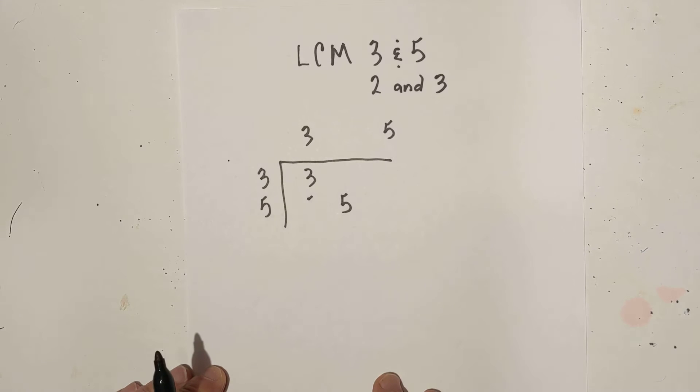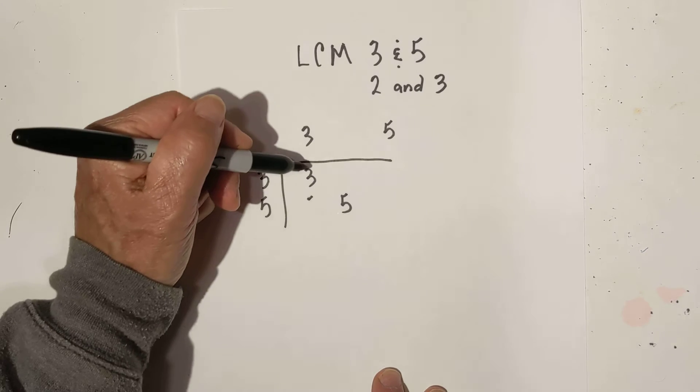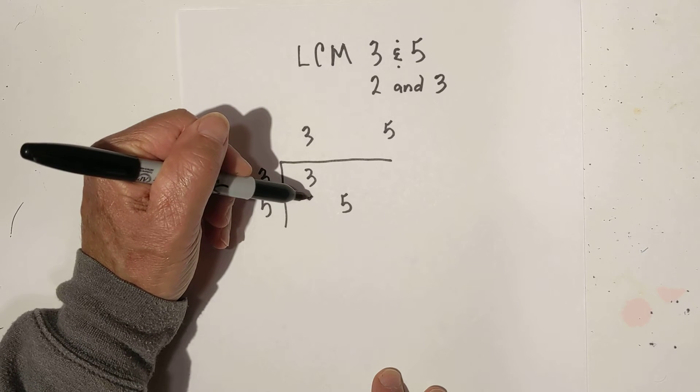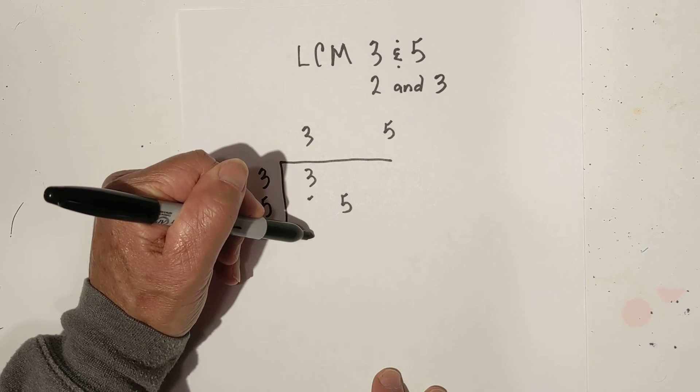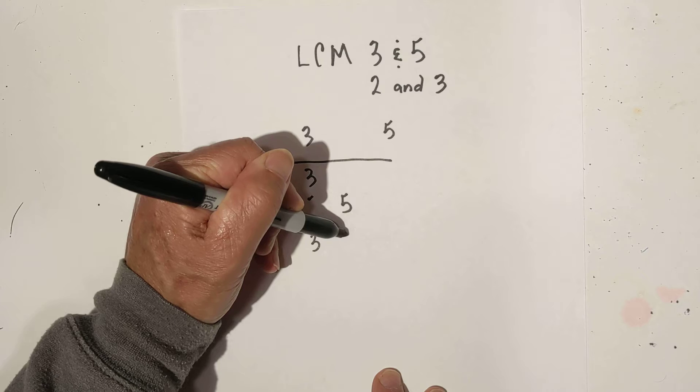There's not that many factors. Then basically the rule is you bring down each number, so you bring down 3 and you bring down 5.